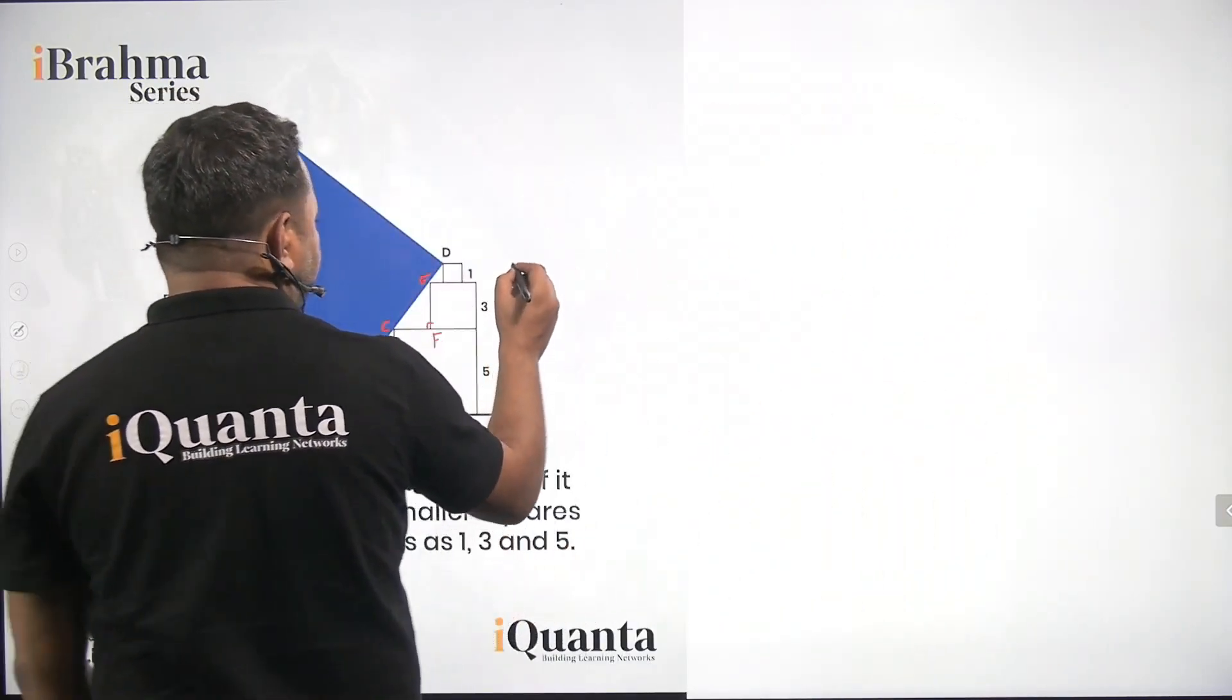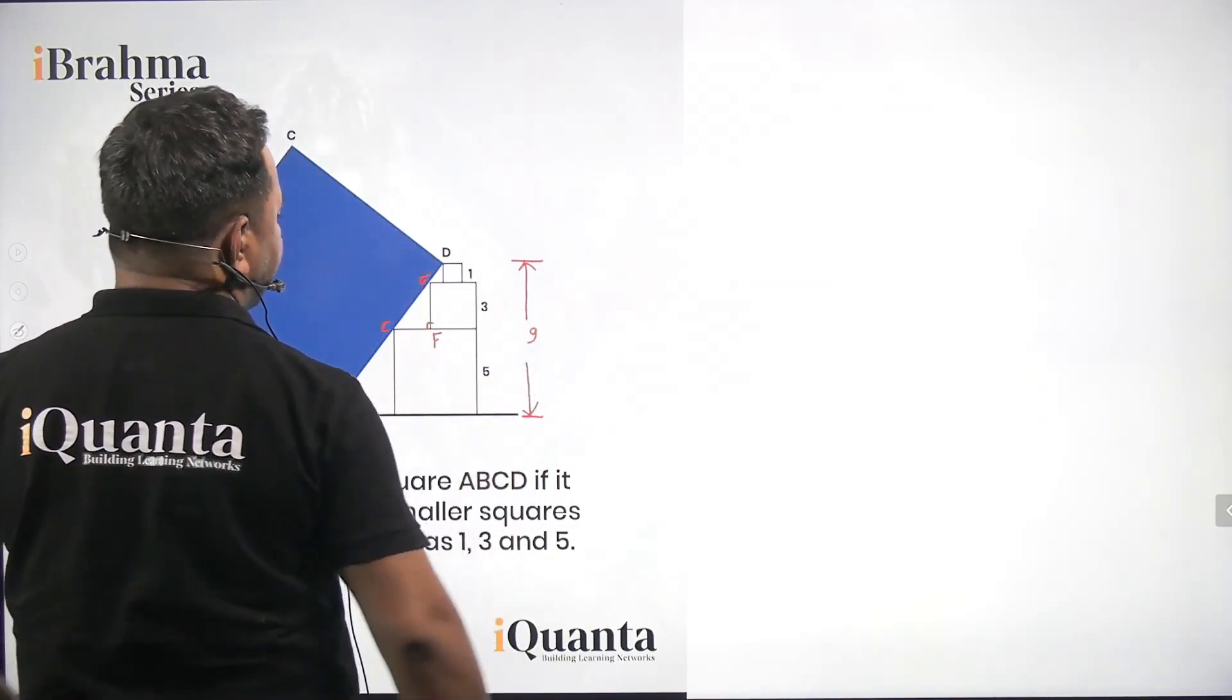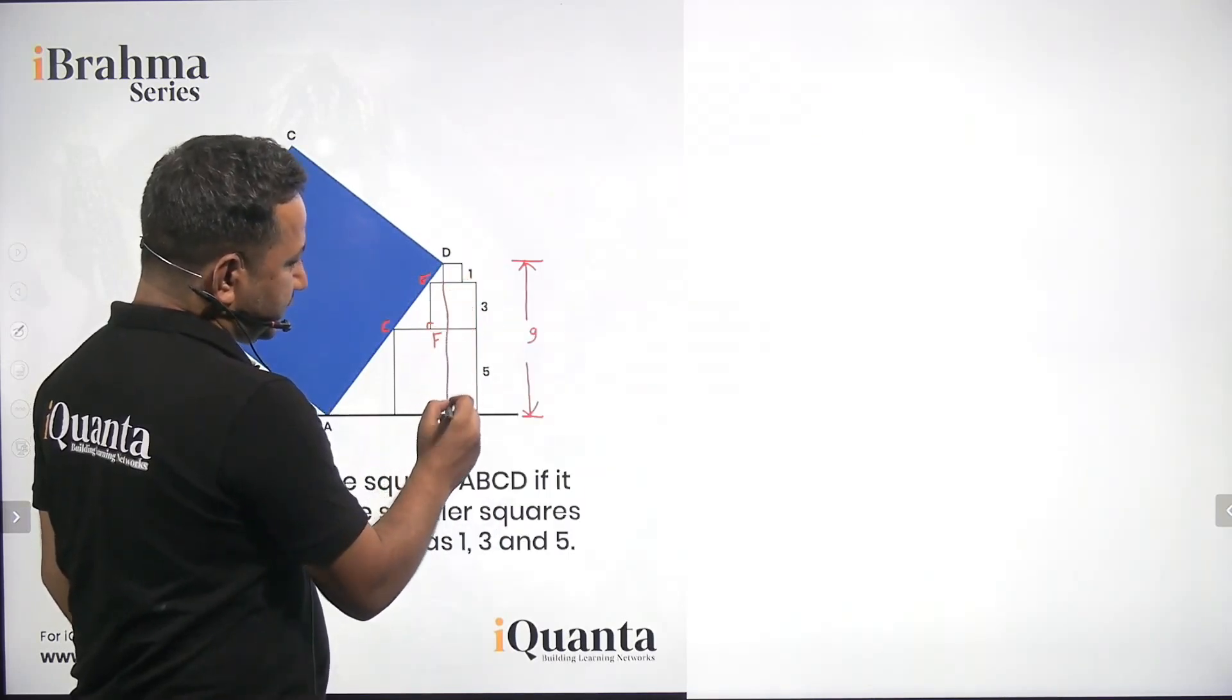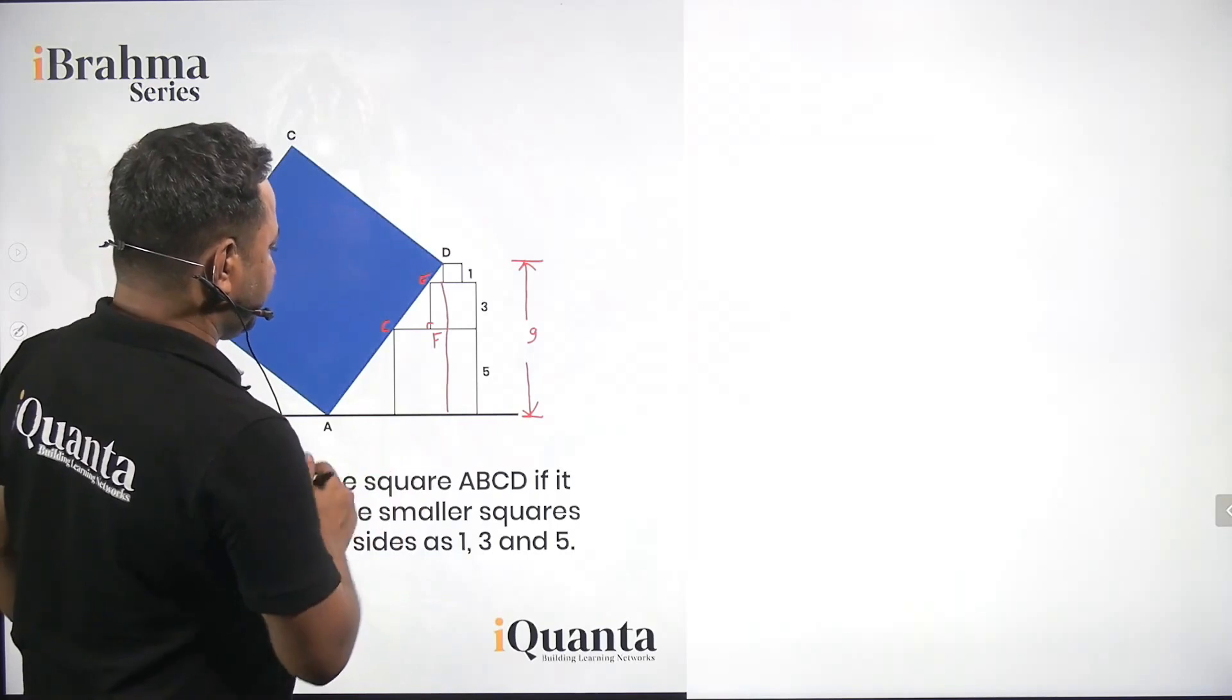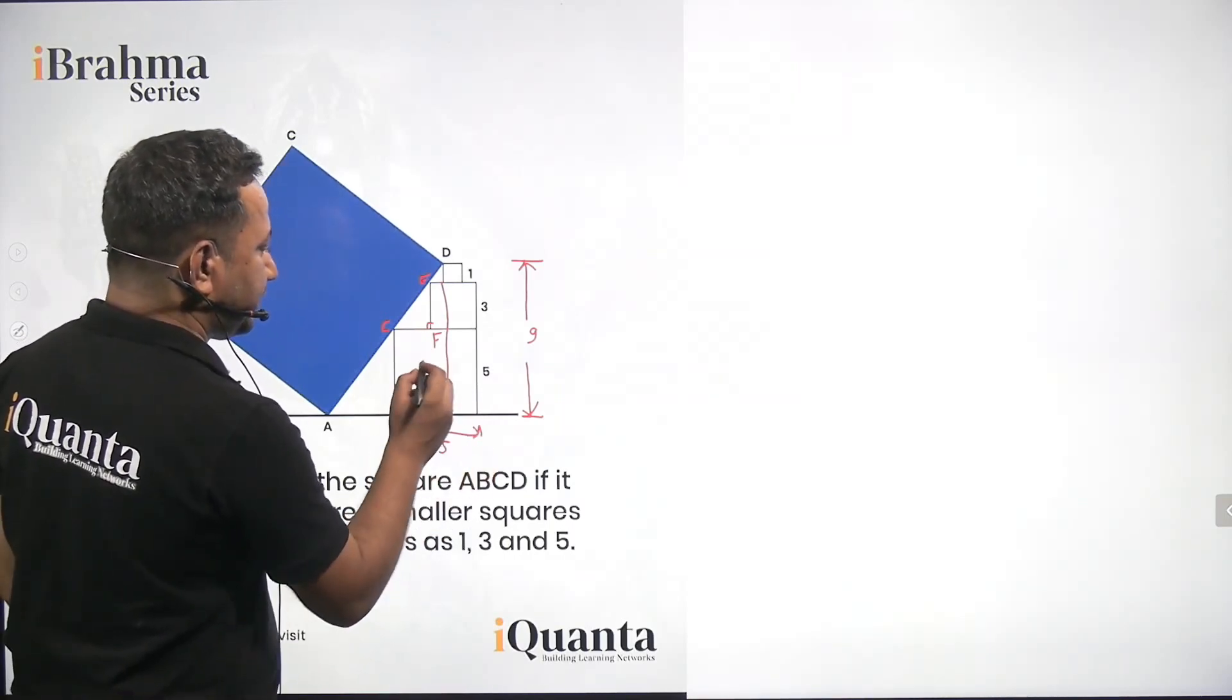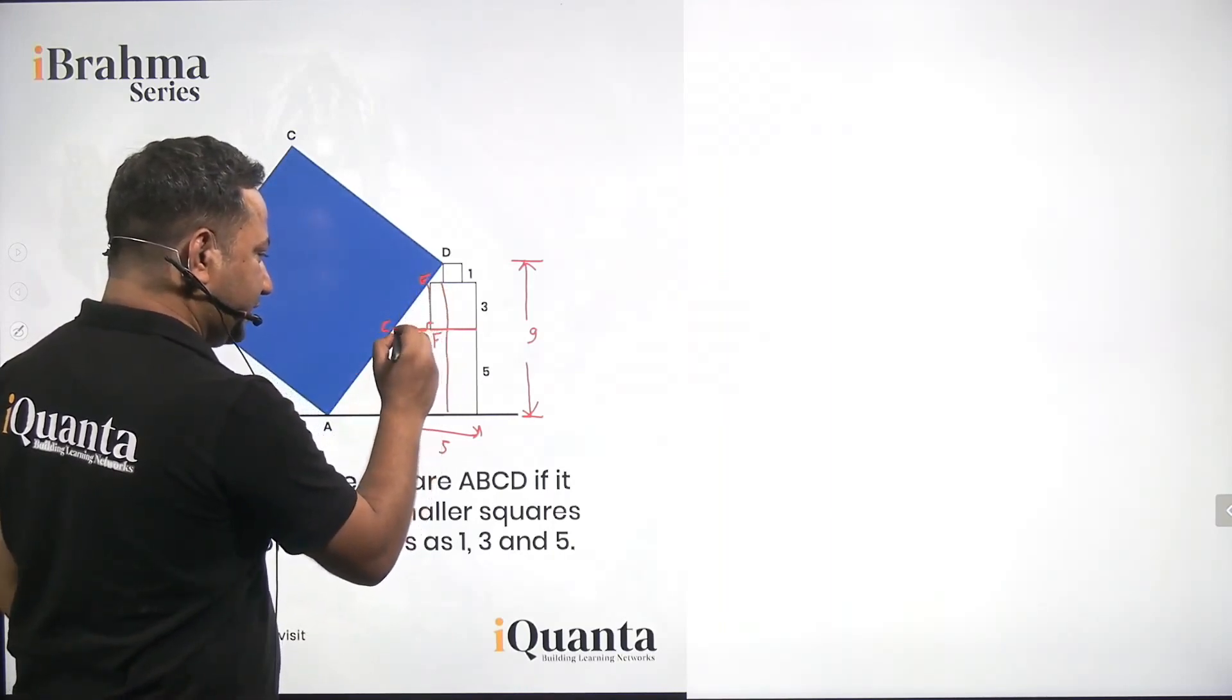So now if I calculate the distance from this point to the ground, this will be equal to 1 plus 3 plus 5, that is 9 units. If I drop this line here, then this hole will be 9 units as shown. Now as we know that if this hole is 5 and this one is 3, then this part will be of 2 units. So this one is 3 and this one is 2.